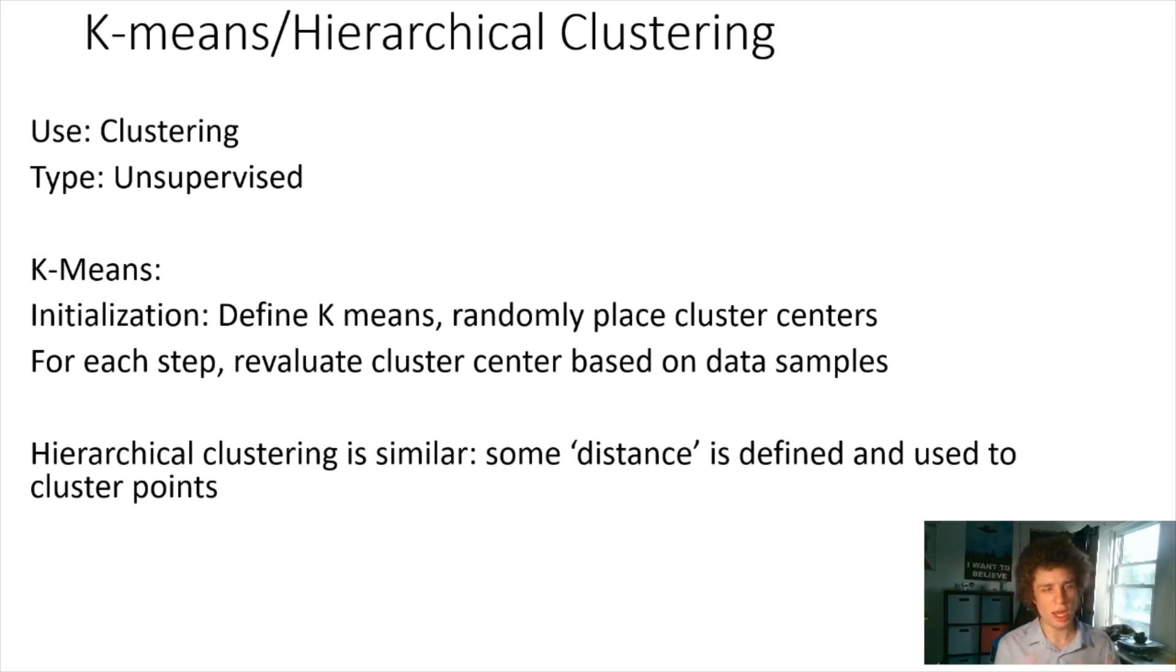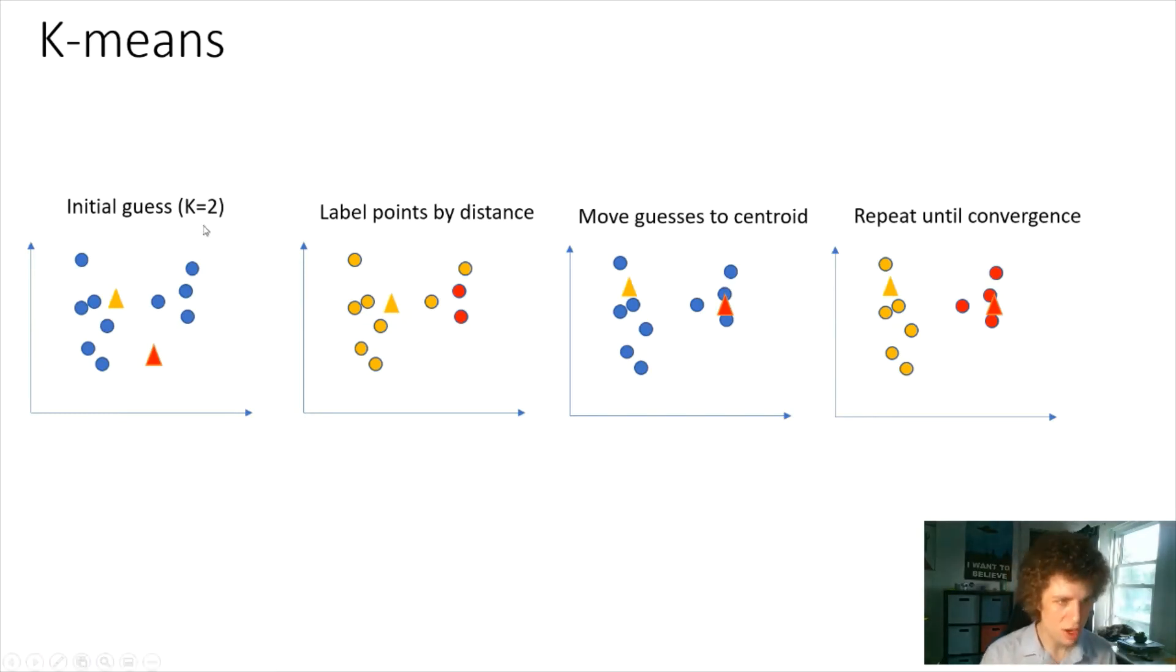I'll go more in detail into k-means because this is one they mentioned might be important. We initially define some k-means. We choose k to be some number. In my example, I'm choosing two. We randomly place our two cluster centers anywhere on the map. For each step, we re-evaluate these cluster centers based on the centroid. There's some random data and you can see there's like two clusters here. These two points are closest to the red, and the rest are closest to the yellow.